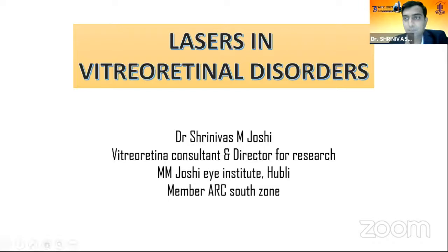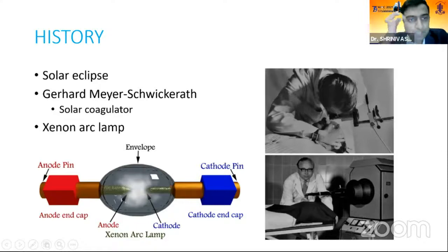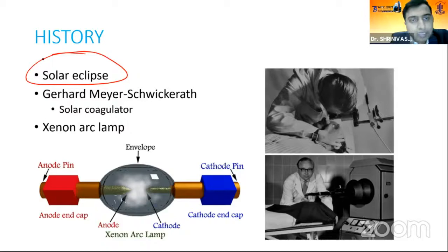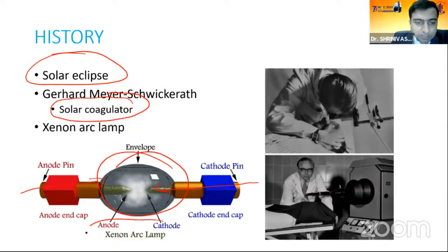If you look into the history, how did the laser come into the picture? It was mainly because of the solar eclipse. That is when Gerard, Mayer, and Shvikar formed the solar coagulator. They took the anode pin and the cathode pin and formed an envelope, and that is how the birth of the xenon arc lamp was produced — the first breakthrough in laser technology.